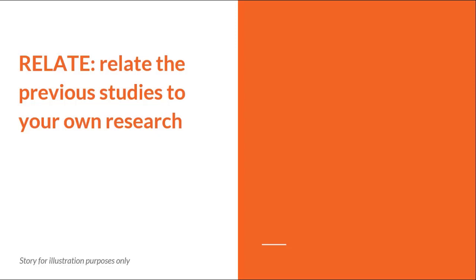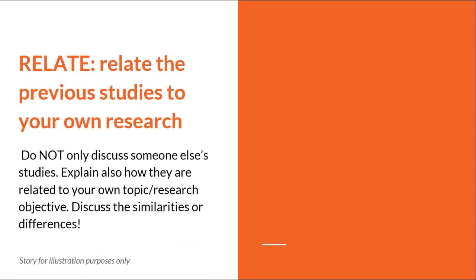The next important element in your review is you must relate the previous studies to your own research. Whenever you discuss a previous study, you must make an explicit statement which links your own topic to the previous studies that you have been discussing. Do not just discuss something and leave it, moving on to the next study. Try to relate the previous studies to your own topic or to your own research objective. Do not only discuss someone else's studies — explain also how they are related to your own topic or to your own research objective.